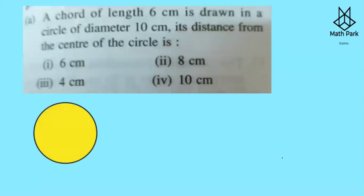We start with 17A Question 1. A chord of length 6 cm is drawn in a circle of diameter 10 cm, so the radius is 5 cm. We drop a perpendicular from the center, which bisects the chord, giving two halves of 3 cm each. We need to find the distance from the center. Since 3, 4, 5 is a Pythagorean triplet, the answer is 4 cm.